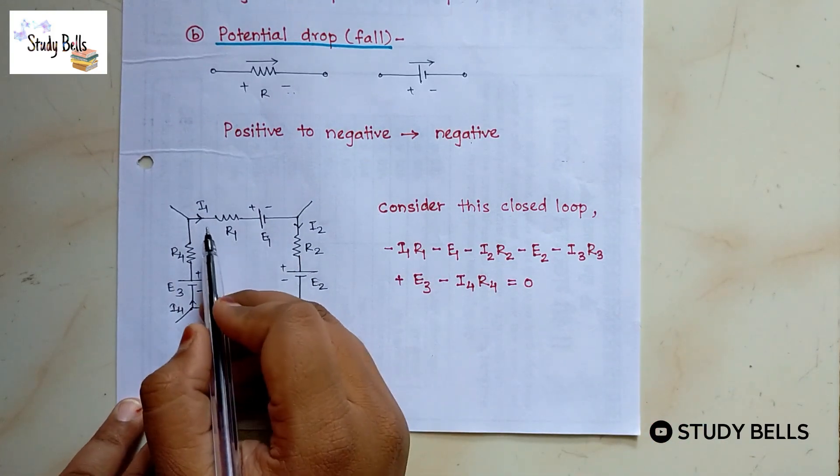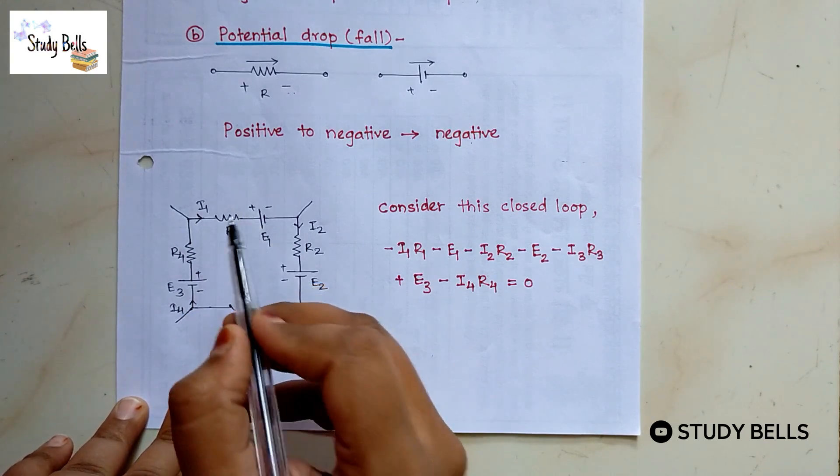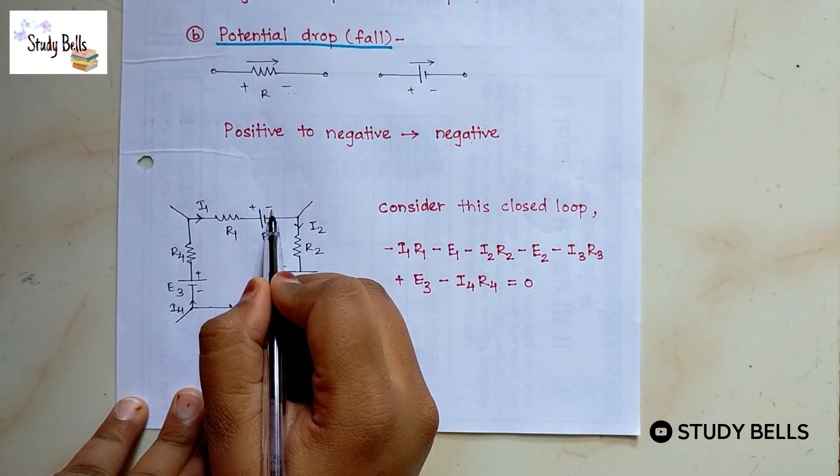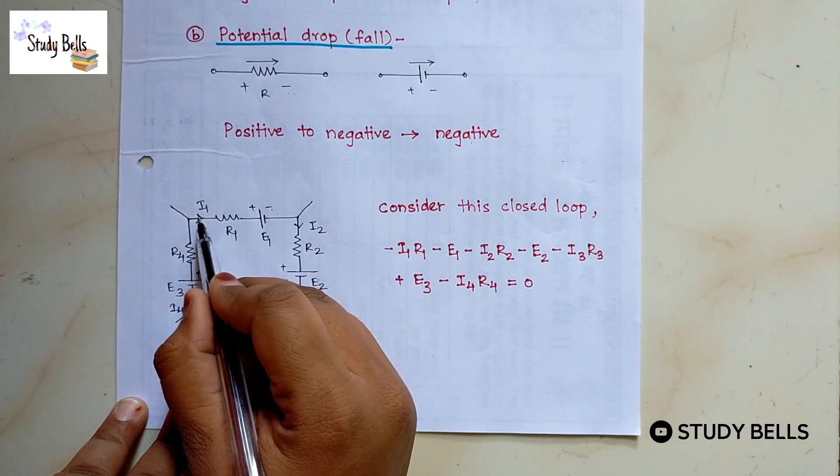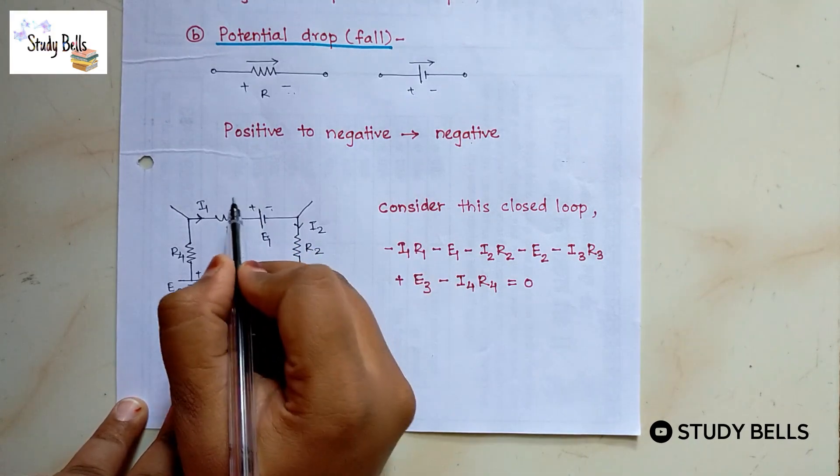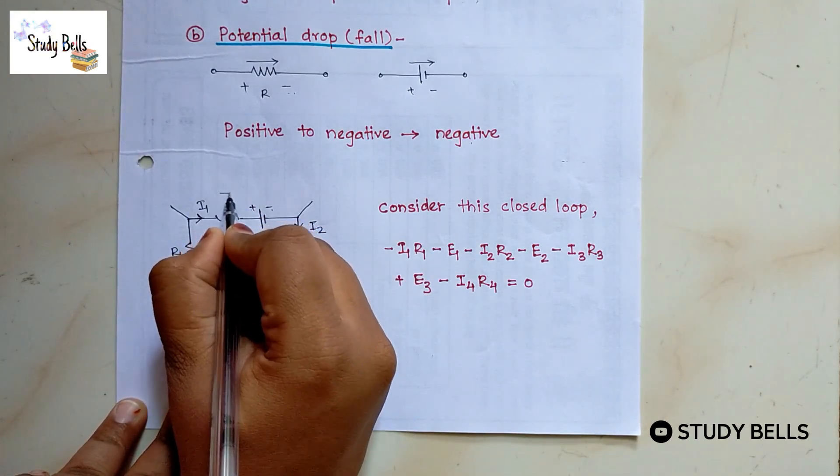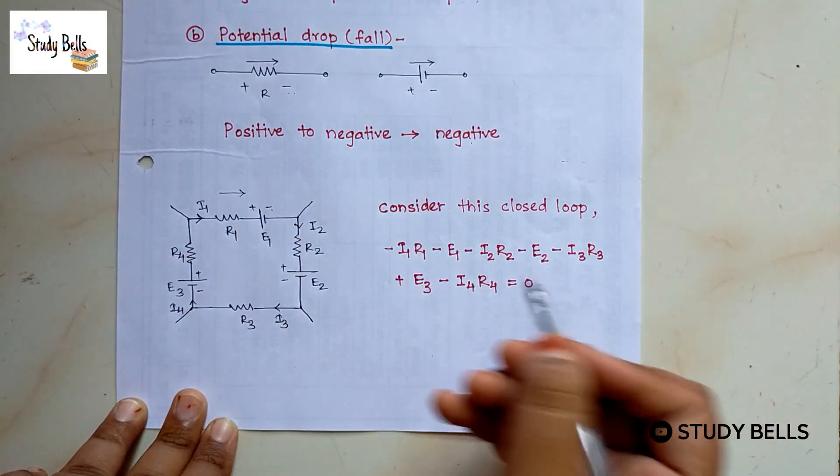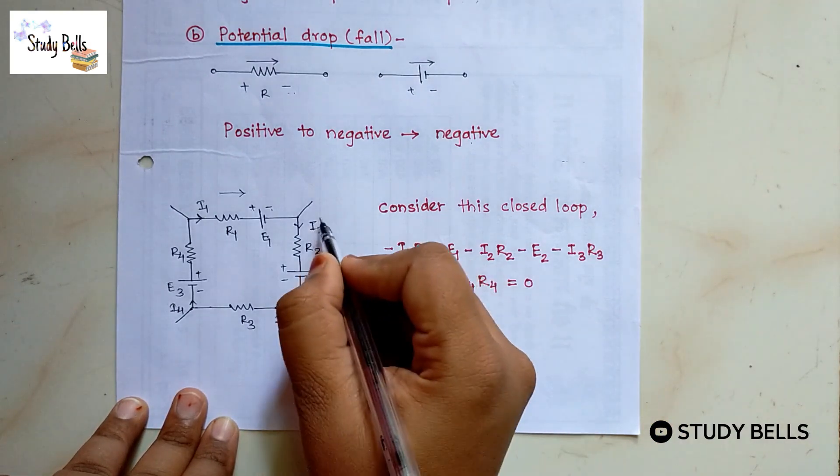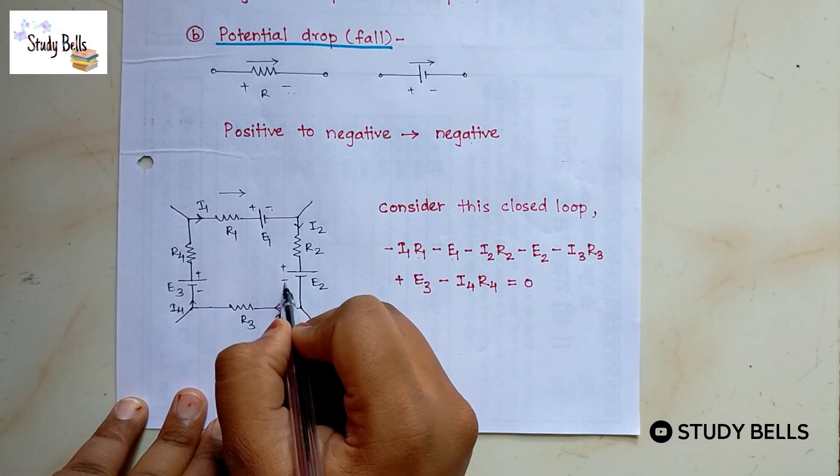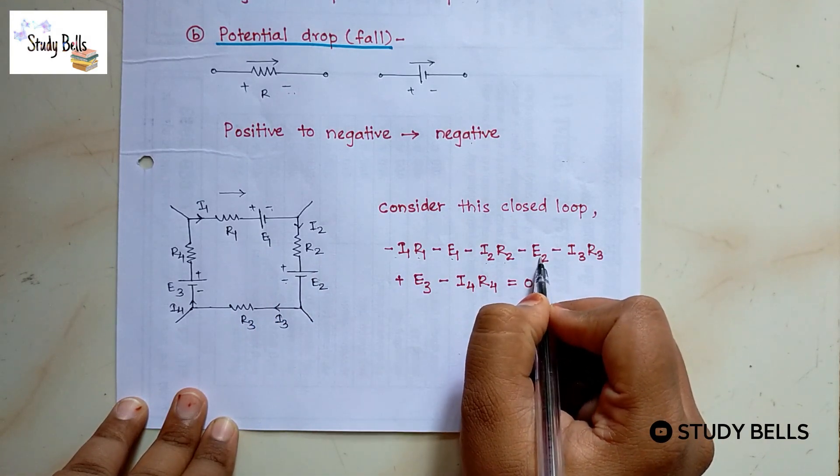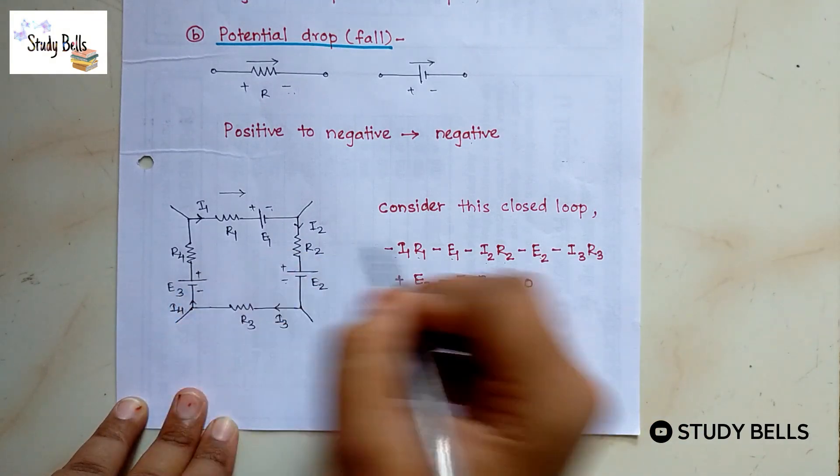Now we will take from I1. Here positive to negative. So sign is negative. Minus I1 R1 minus E1. We are going from this side to this side. So minus I1 R1 minus E1. Here again positive to negative. So minus I2 R2 minus E2.